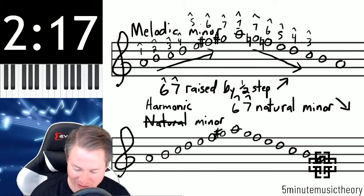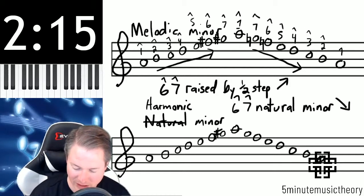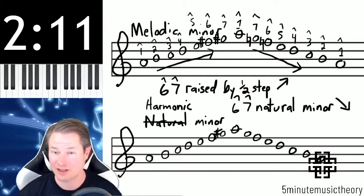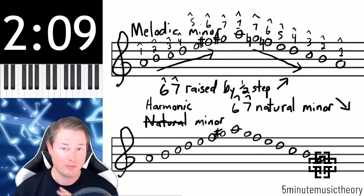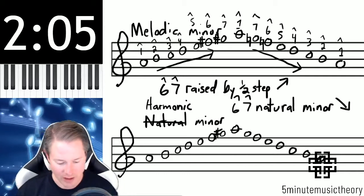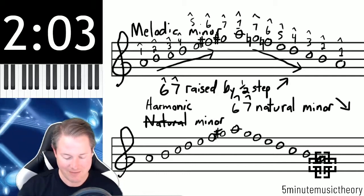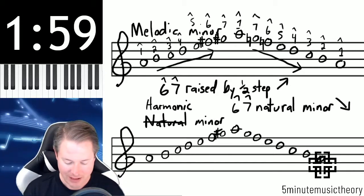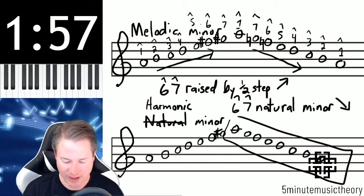The only thing that changes is that top portion of the scale. Now we'll get into a little bit later why this happens, and it's actually slightly more complicated than just ascending and descending, but when we're first introducing it, it's a kind of an easy way to conceptualize what's going on here. So we have that six, seven, one raised on the way up, and then it's back to natural minor on the way down.